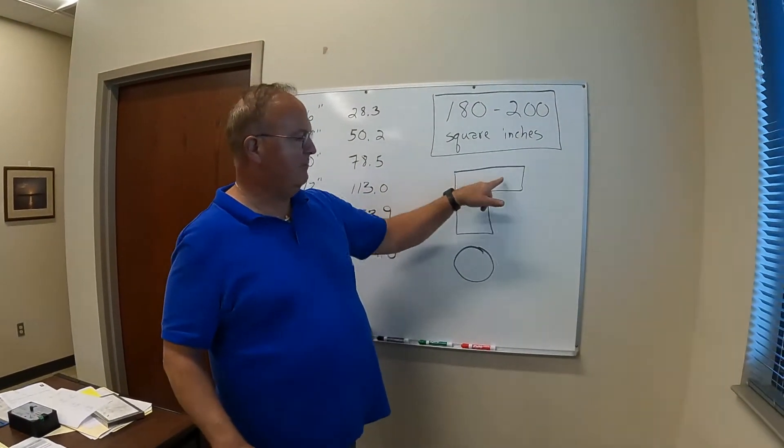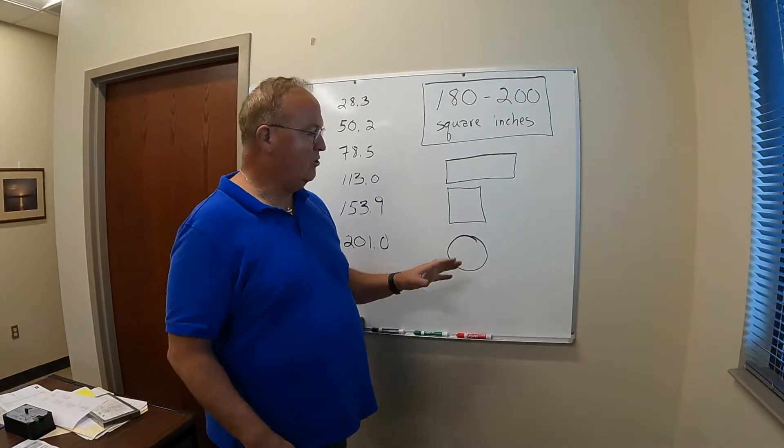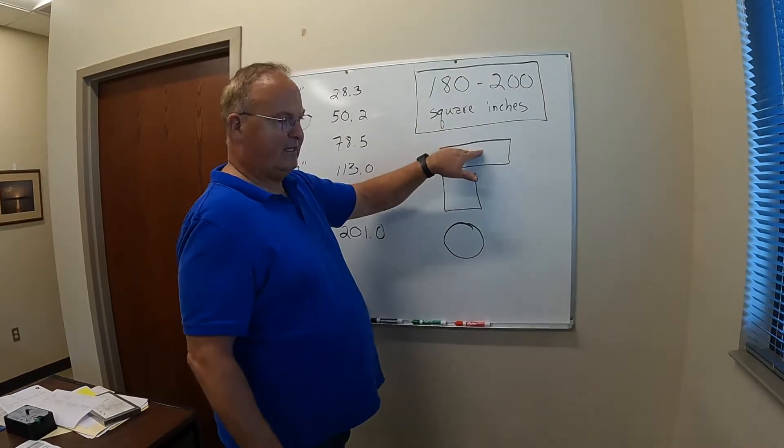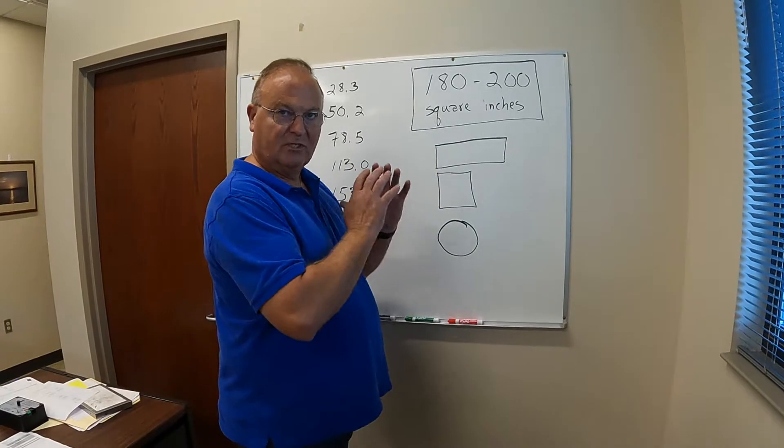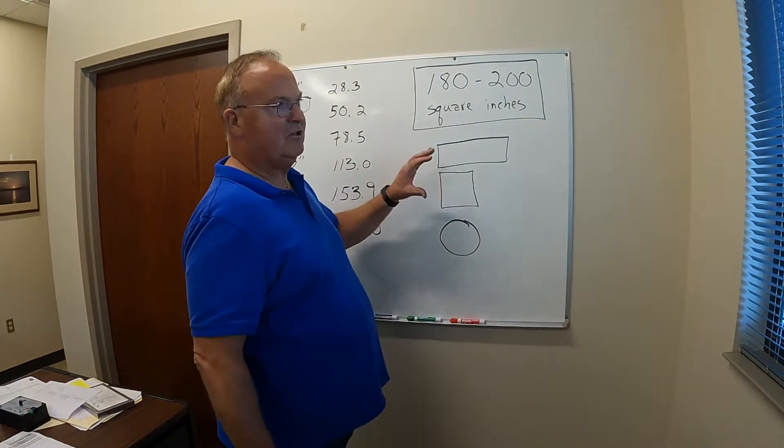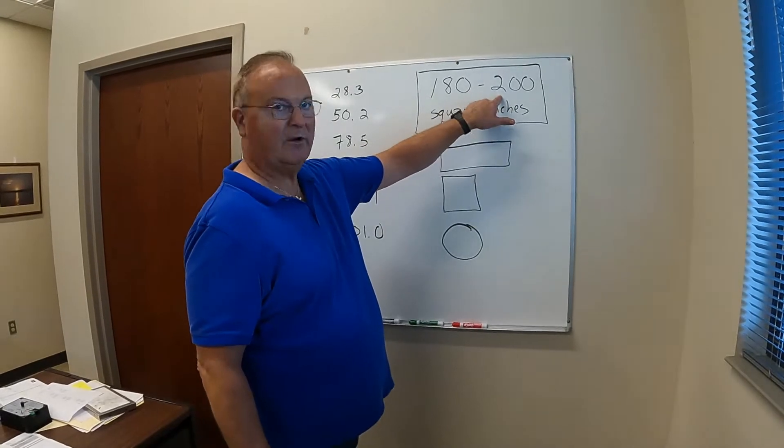Now your ducting can be rectangular, it can be square, it can be round, and you can have multiple. So you might have a rectangular and a round duct coming off, it doesn't matter, you just need to make sure that your total square inches of ducting coming off the plenum is between 180 and 200 square inches.